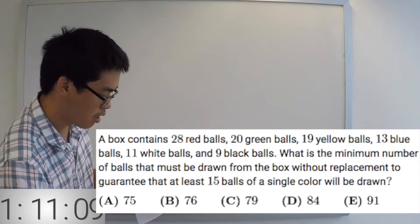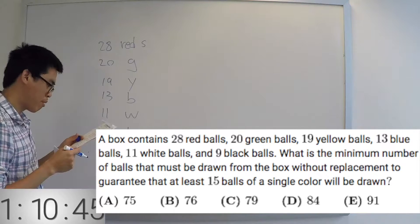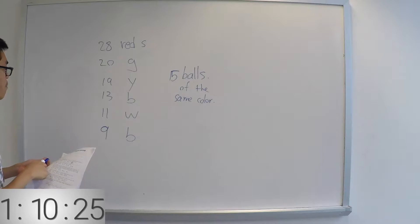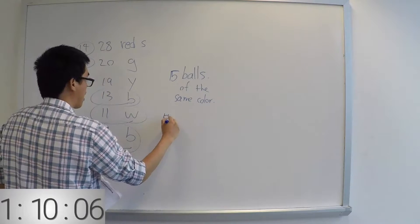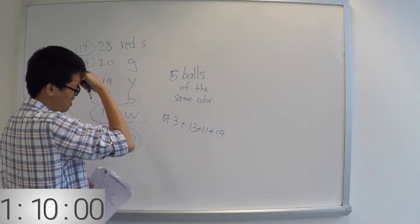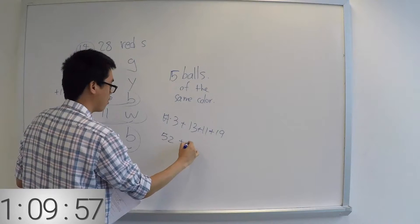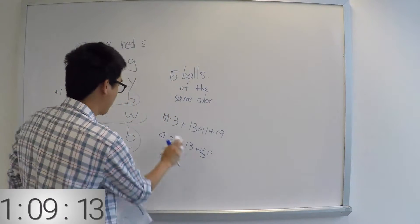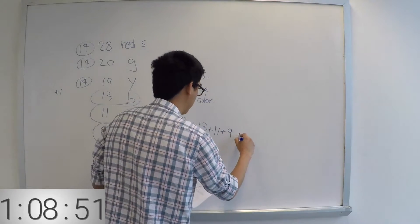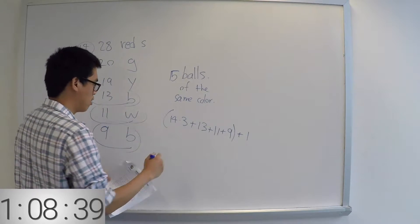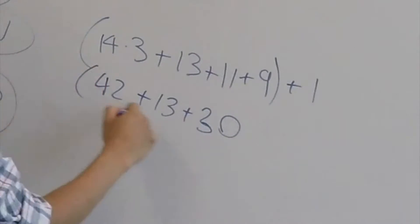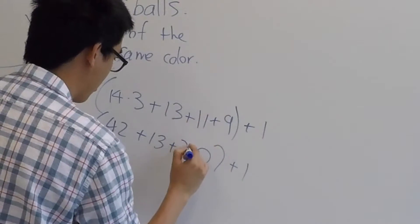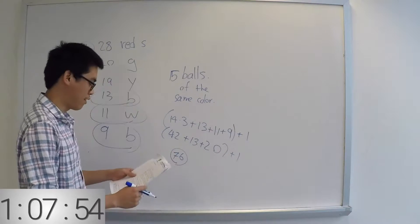Number three: box from 10 — 28 red balls. We want 15 balls of the same color. The key to this problem is we can pick all of them — 3 times 3 is 9, 14 times 3 is 42, plus 20. If we select all of those, we need one more. So starting at 10, it should be 26.